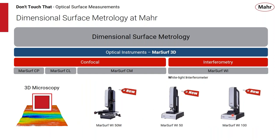Under interferometry, we have our MARSurf WI product line — a single product line under interferometry. These are 3D microscopes, very similar in appearance to the MARSurf CM product line, relatively new in our lineup. We offer a range of tools, all the way from a manual tool in the WI-50M up to three motorized axes in the WI-100.